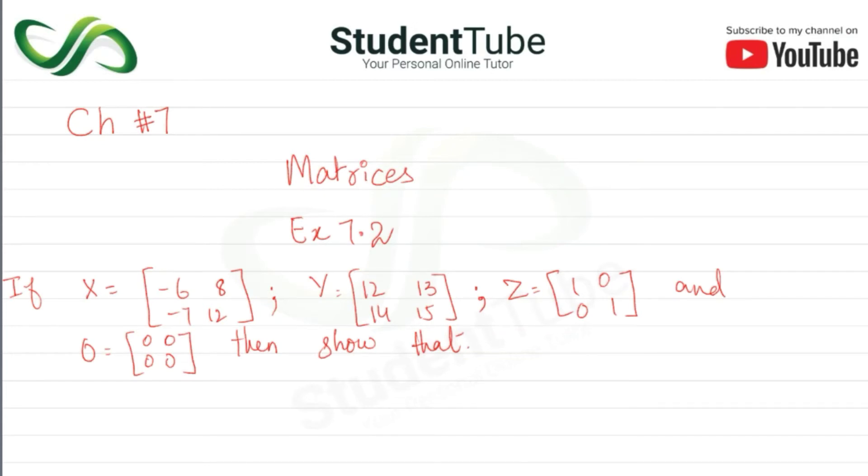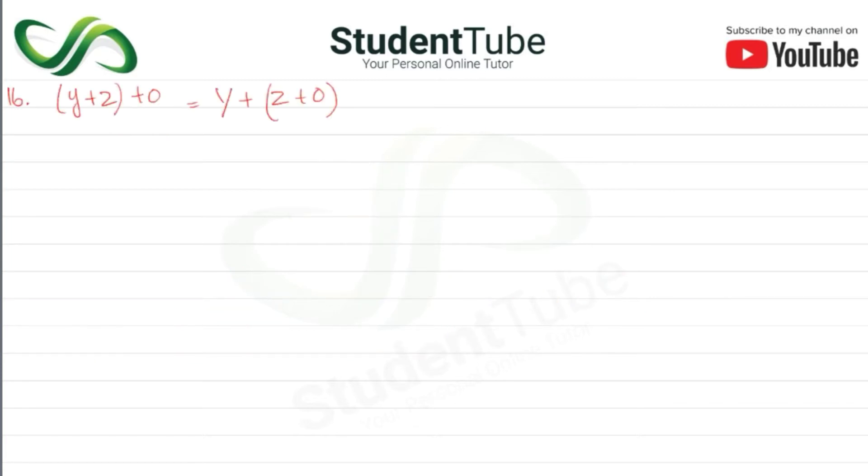Assalamu alaikum, welcome to StudentTube. In this lecture, Chapter 7 Matrices, Exercise 7.2, the question is: if X equals [-6, 8; -7, 12], Y equals [12, 13; 14, 15], Z equals [1, 0; 0, 1], and O equals [0, 0; 0, 0], then show that...